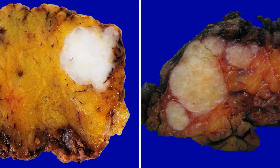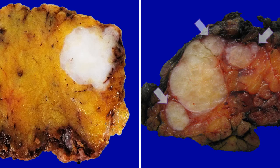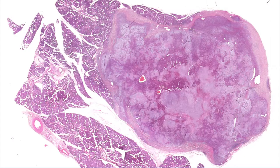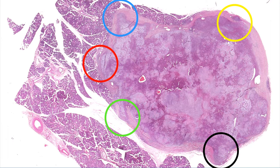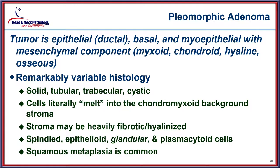The tumors may be multinodular or have pseudopodal extensions that bulge outward from the lesion. Cut sections highlight the multinodularity with pseudopodal extensions expanding out into the adjacent parenchyma, and even at low power you can see multiple areas of tumor extension from the adjacent capsule.